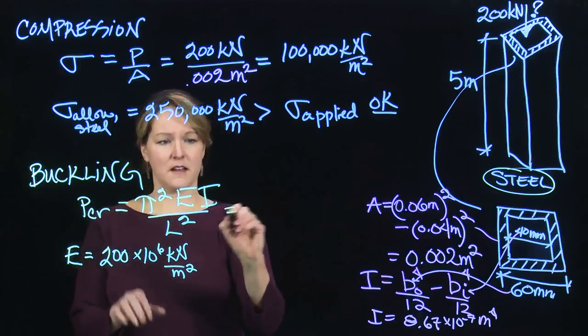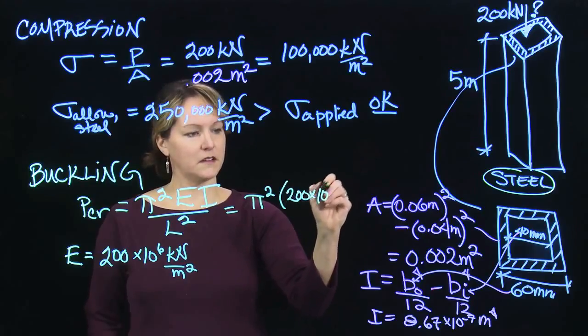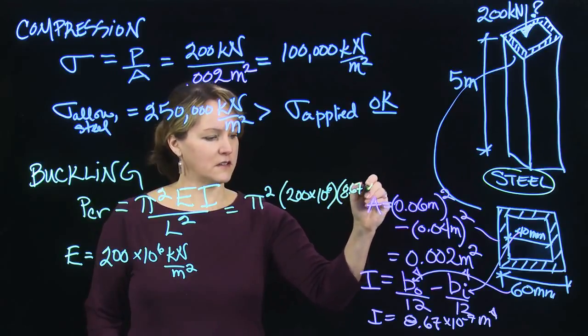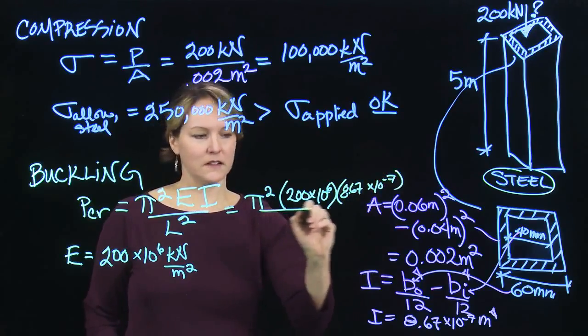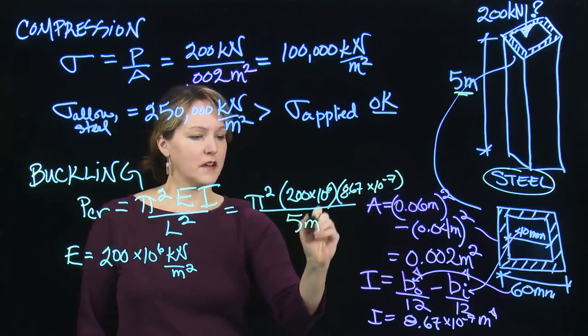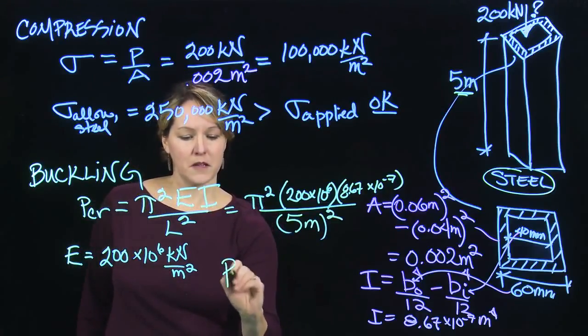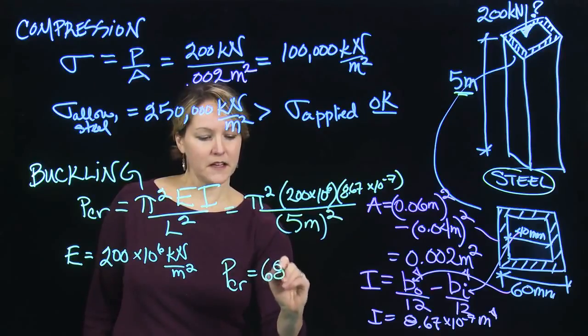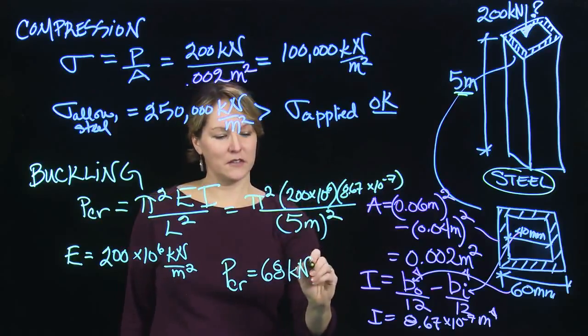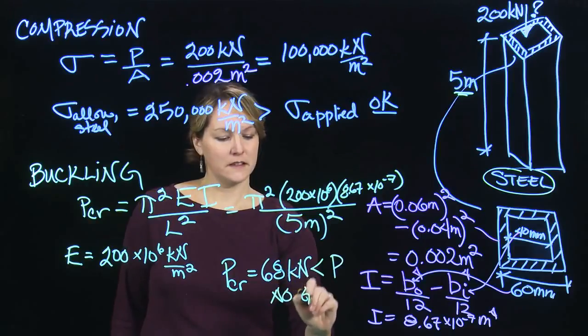So now back to my equation. I have pi squared times 200 times 10 to the sixth times this moment of inertia, 8.67 times 10 to the minus seventh, and that's all divided by my length squared. In this case, it's five meters. Five meters squared. And that'll allow me to calculate this P critical, which ends up being 68 kilonewtons. 68 kilonewtons, but I want to apply 200 kilonewtons. So this is less than my P that I want to apply, so this column is no good.